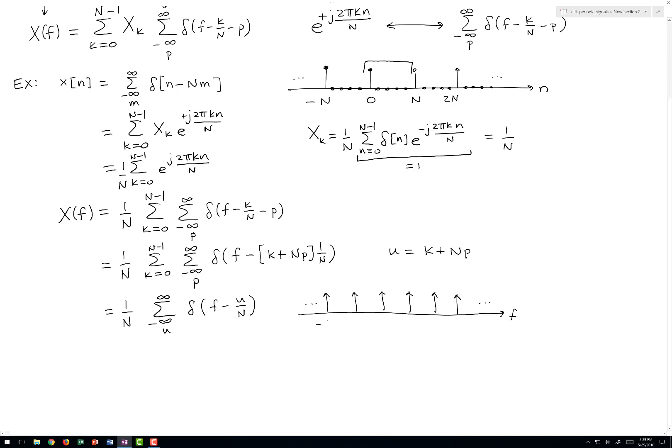This is going to be minus 2 over N, minus 1 over N, 0, 1 over N, 2 over N, 3 over N, and so on.